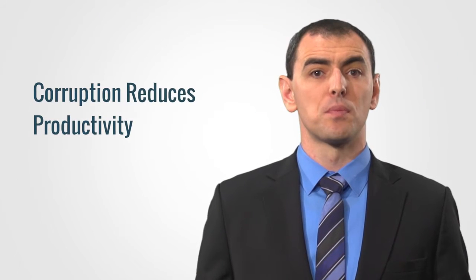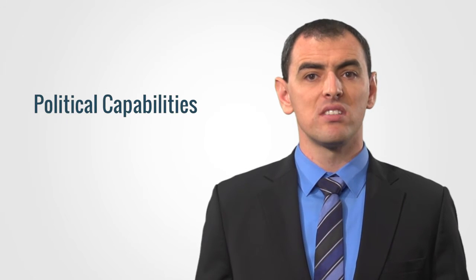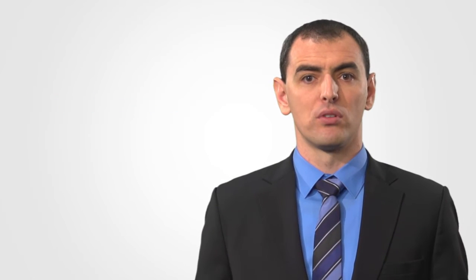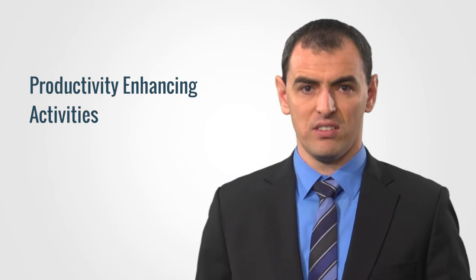For instance, corruption reduces productivity because, rather than innovation and production, talent and effort will be allocated to rent-seeking activities. Corporate political behavior is often necessary, yet developing political capabilities is a cost imposed upon organizations as resources could have been otherwise allocated to productivity-enhancing activities.